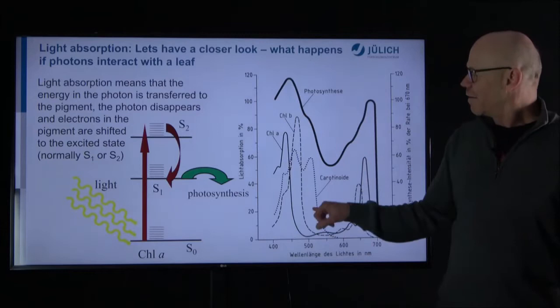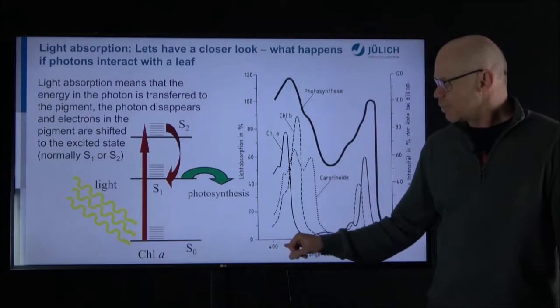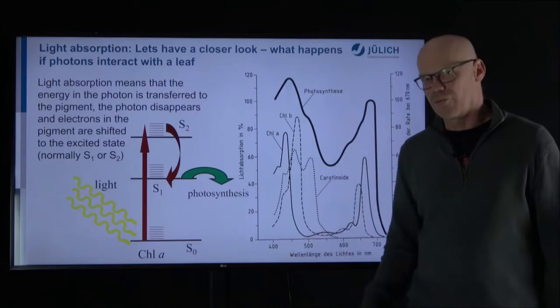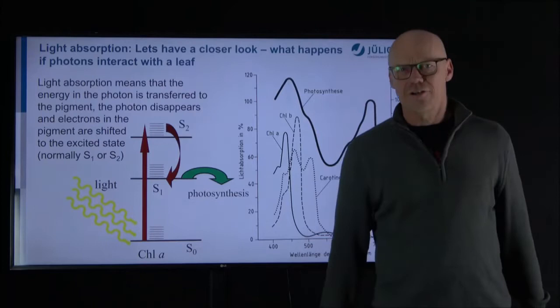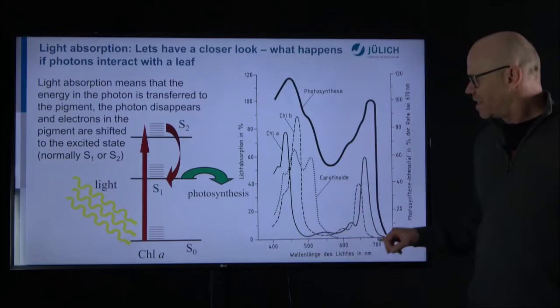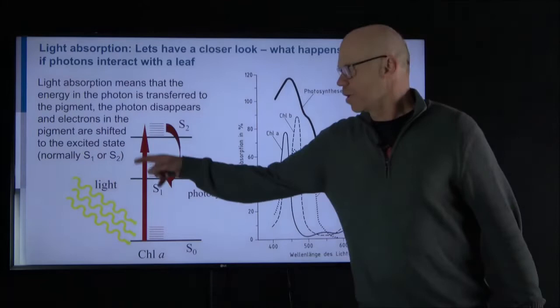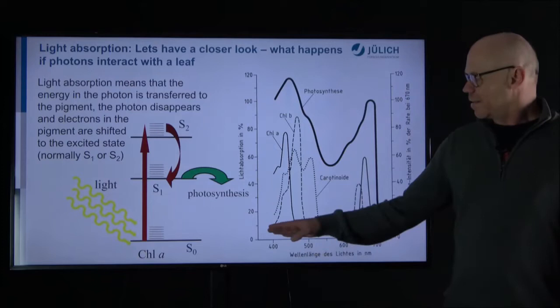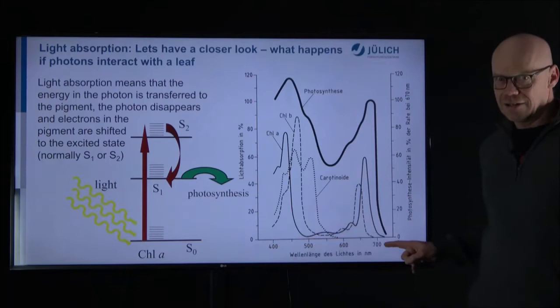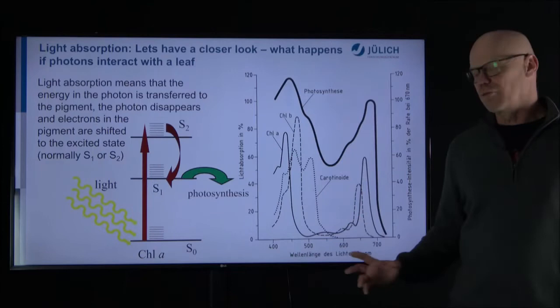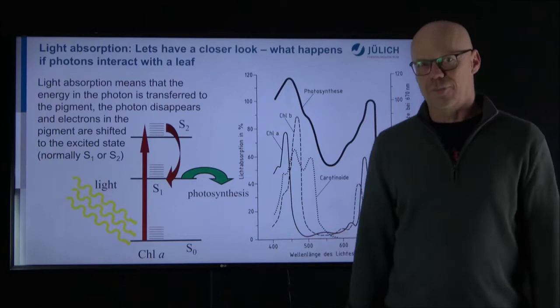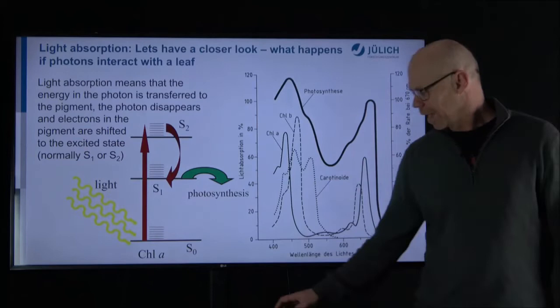Looking at the spectral properties of chlorophyll, with wavelength on the x-axis, you can see that chlorophyll specifically absorbs photons between about 400 and 480 nanometers. There is a spectral window between 500 and 600 nanometers where chlorophyll does not interact with photons, and then again between 600 and 700 nanometers chlorophyll absorbs once more. Absorbing photons means the energy is harvested and stored for use in photosynthesis. Importantly, chlorophyll has this specific absorption in the blue and red, but not in the green — which explains why plants appear green, since those photons are not absorbed.